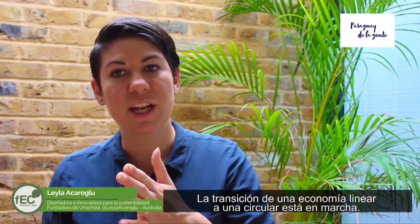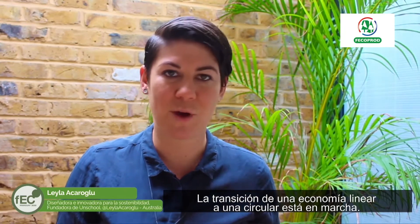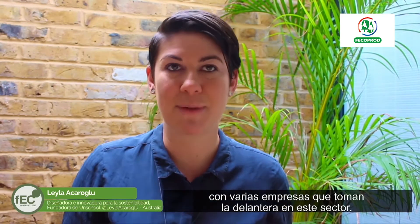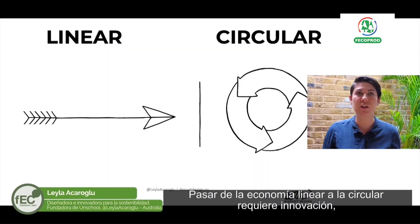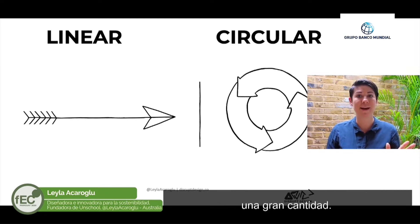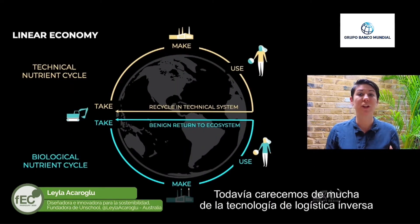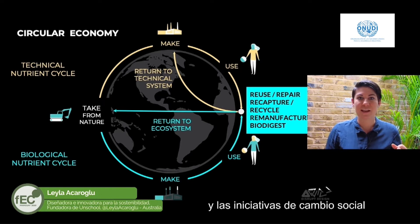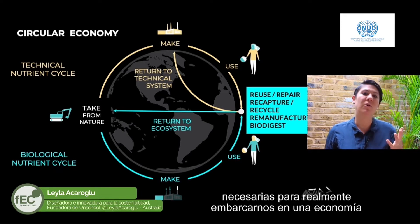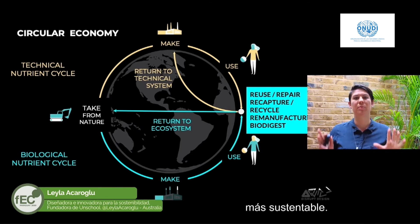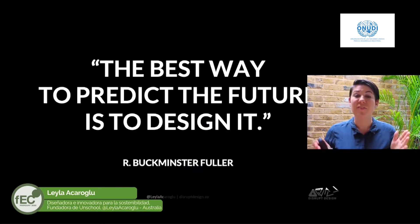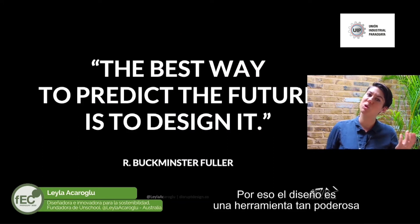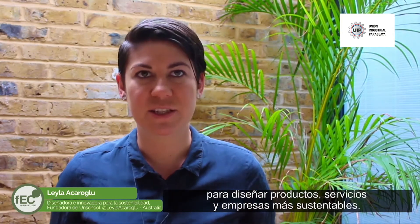The idea of transitioning from the linear to the circular economy is well underway. We are seeing progressive actions around the world with many companies taking pioneering leadership in this space. Moving from the linear to the circular economy requires a significant amount of innovation. We haven't actually come up with a lot of the technological reverse logistics and social change initiatives that are required to truly embrace a more sustainable economy. That's where the opportunity lies, and that's why design is such a powerful tool that people use to design more sustainable products, services, and businesses.